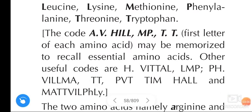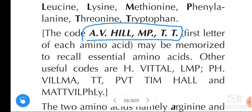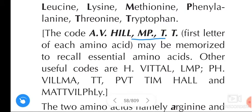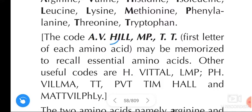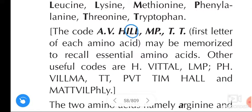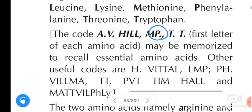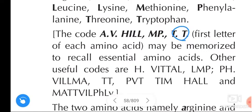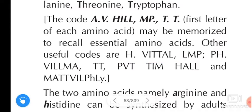The code is AV Hill MPTT — this uses the first letters of all the essential amino acids. You may remember it like this: MP and TT are two members who went to the hill, and the hill's name is AV. So AV Hill MPTT covers: arginine, valine, histidine, isoleucine, leucine, lysine, methionine, phenylalanine, tryptophan, and threonine. Other useful codes are also provided if needed.